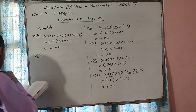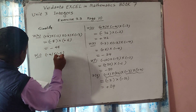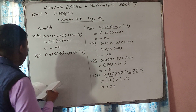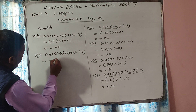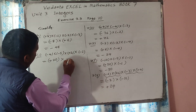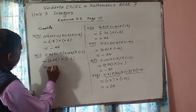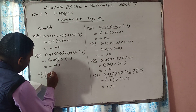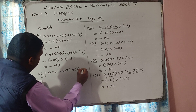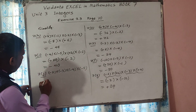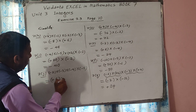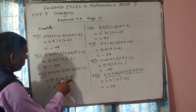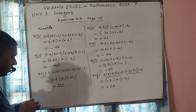Now 7I: minus 4 into minus 5 into plus 2 into minus 1. First and second — minus into minus gives plus 20. Last two — plus into minus gives minus 2. Then plus 20 into minus 2 — minus 40 is the answer. Now 7J: minus 2 into minus 3 into minus 4 into minus 5. First pair — minus into minus gives plus 6. Last pair — minus into minus gives plus 20. Then plus 6 into plus 20 gives plus 120. Plus 120 is the answer.